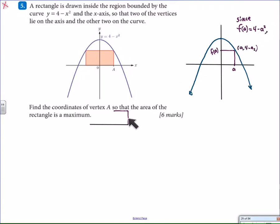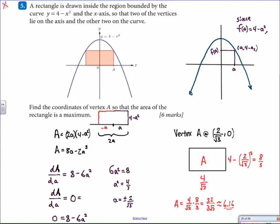This produces a rectangle that's 4 minus A squared tall. The width of the rectangle is formed by A in this direction and an additional A in the opposite direction for a grand total of 2A.